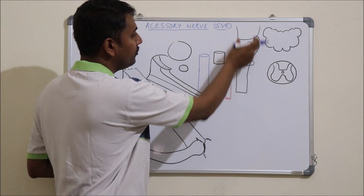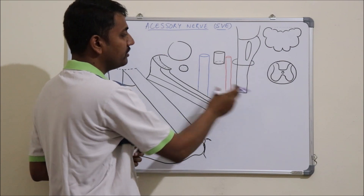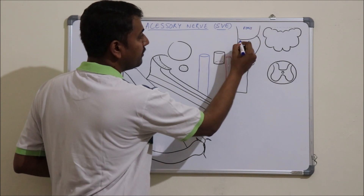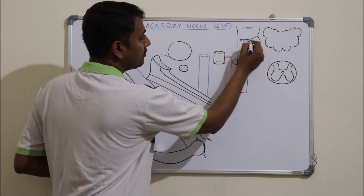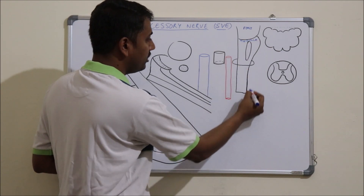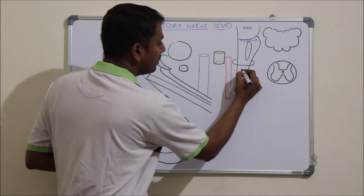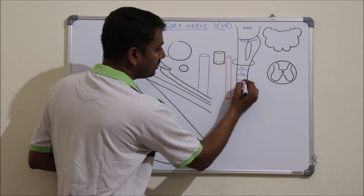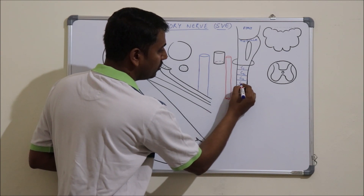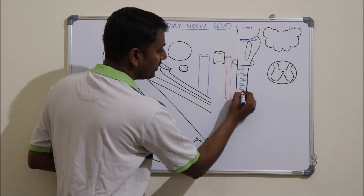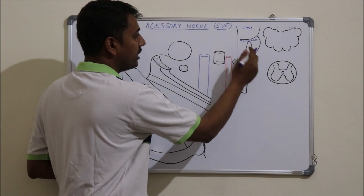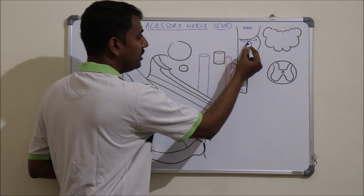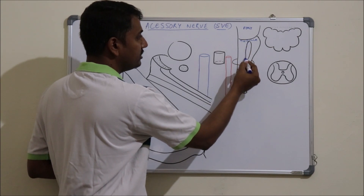This is the lateral view of the brainstem and the upper part of the spinal cord. This is the pons, this is the medulla, and this is the cervical part of the spinal cord. The cervical segments shown are C1 through C5. This is the olive; anterior to it is the anterolateral sulcus and posterior to it is the posterolateral sulcus.